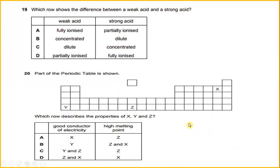Which rule shows the difference between a weak acid and a strong acid? There are differences measured through partially ionized and fully ionized.